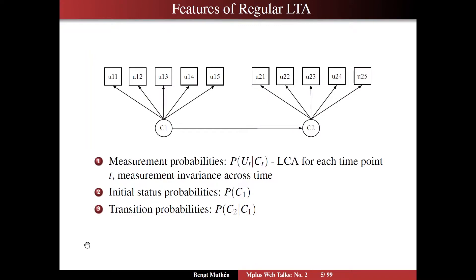Turning to slide five, here you have a prototypical LTA. You have two time points, and for each time point we measure these five indicators. For each time point we have a latent class variable, C1 for time 1, C2 for time 2.